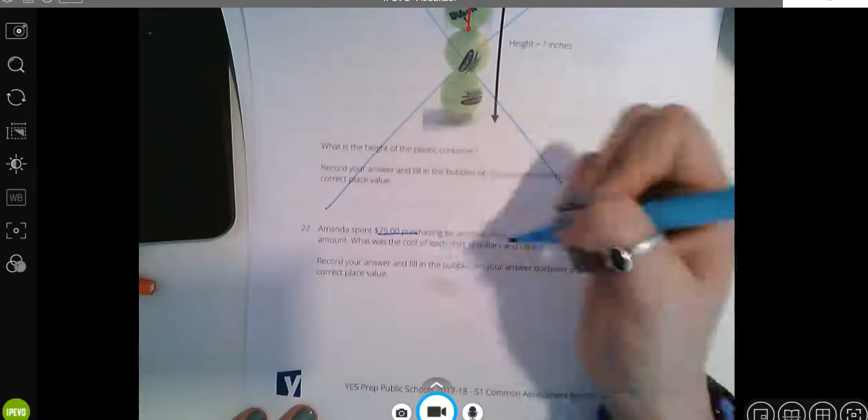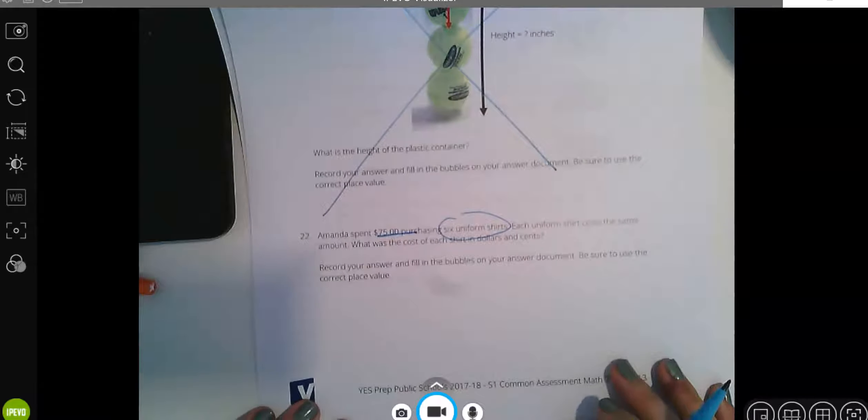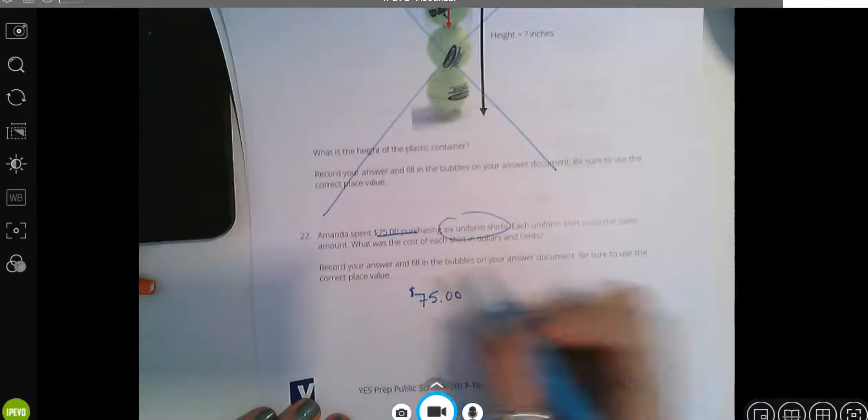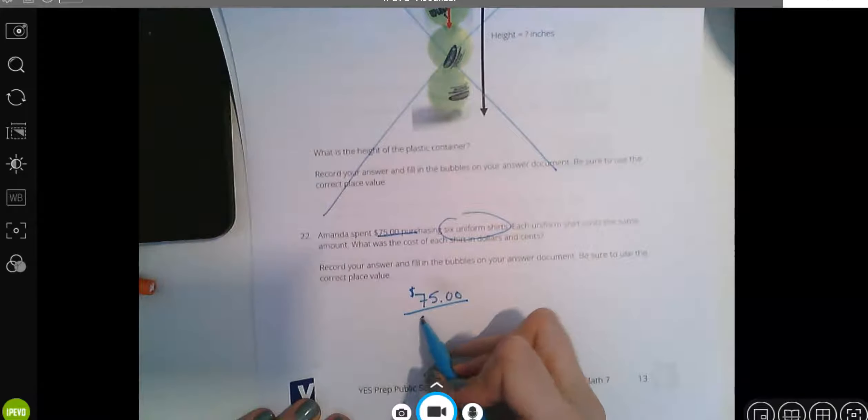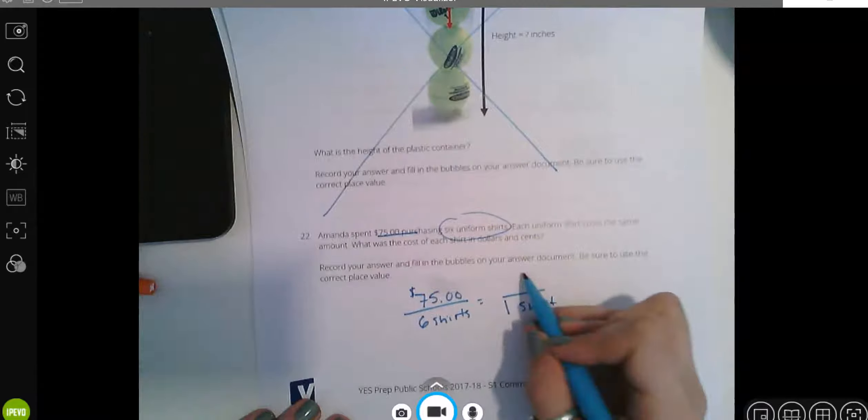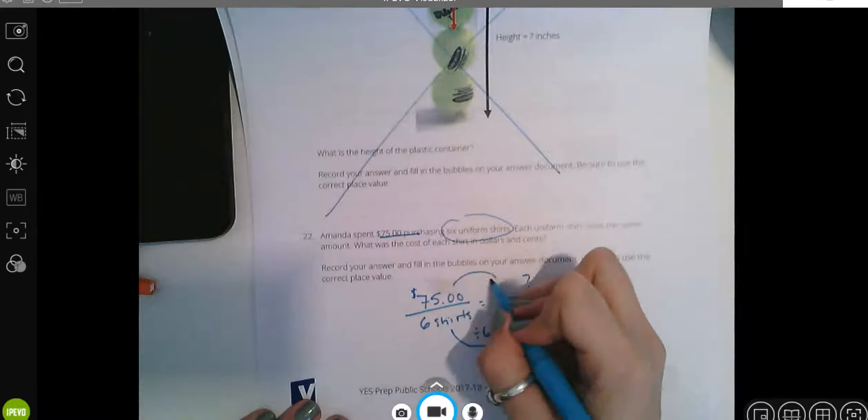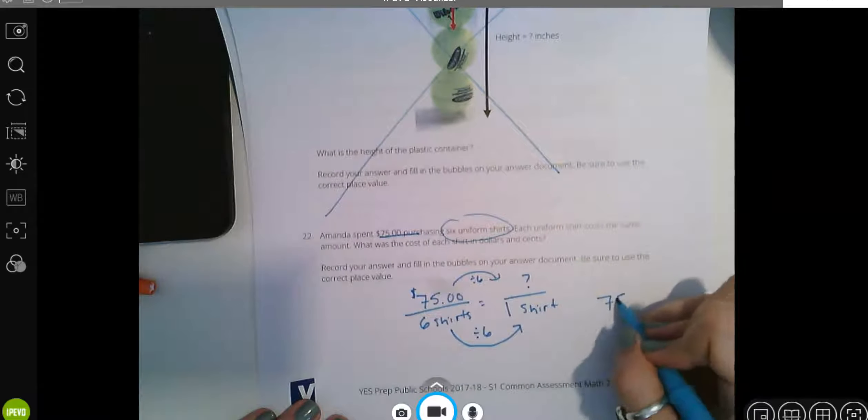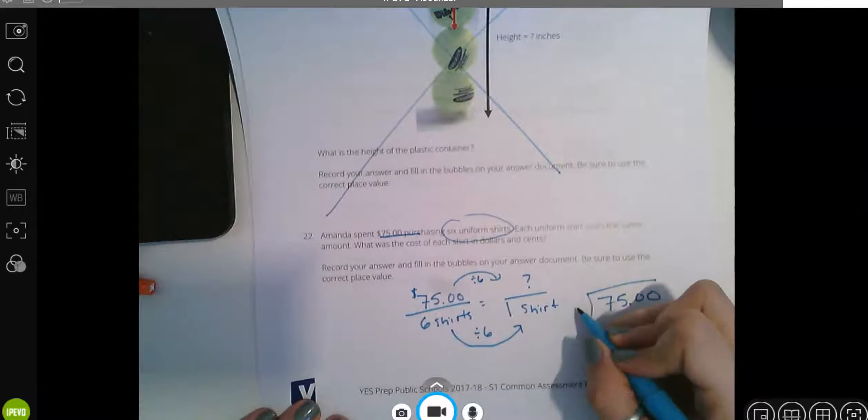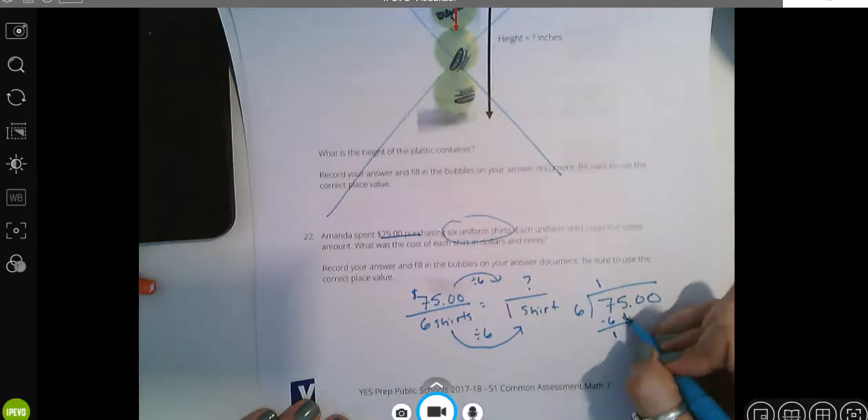Amanda spent $75 purchasing six uniform shirts. Each uniform shirt cost the same amount. What was the cost of each shirt in dollars and cents? Okay so $75 for six shirts, that means that one shirt is how much money. To get from six to one we're going to divide by six. So we're going to divide $75 by six. Six goes in one time.